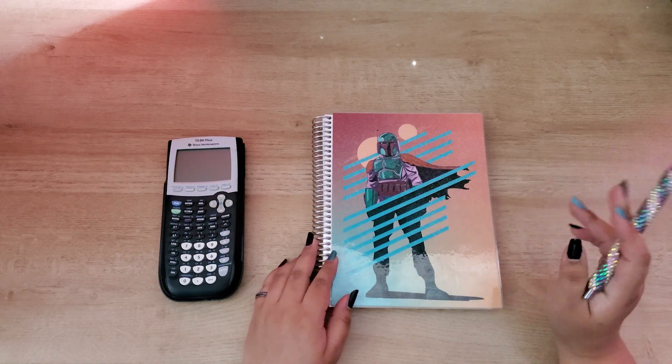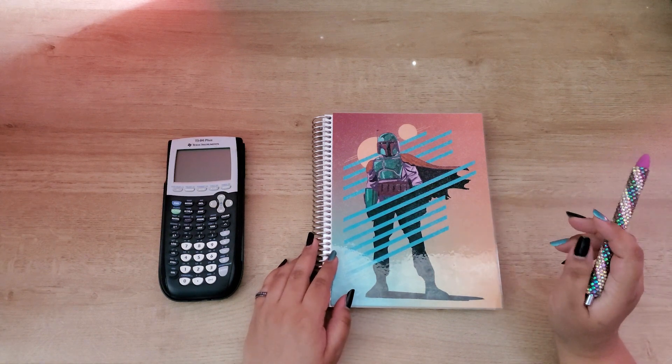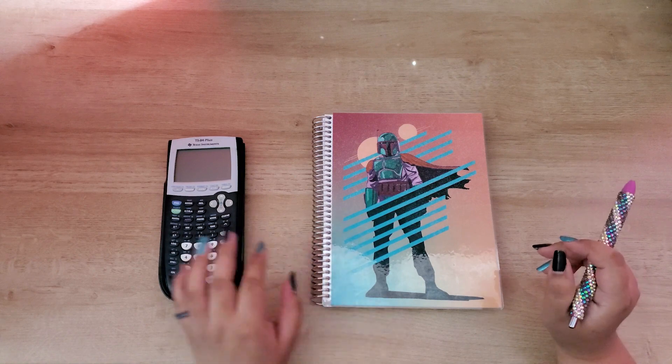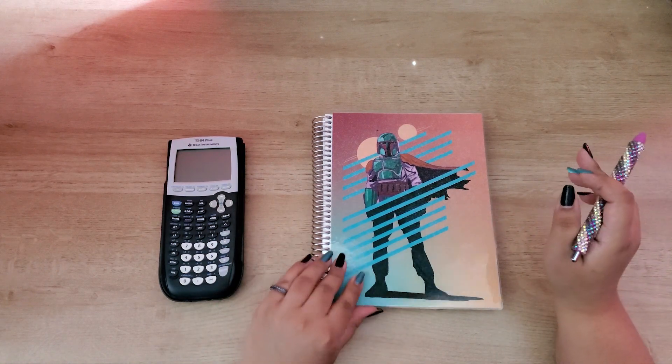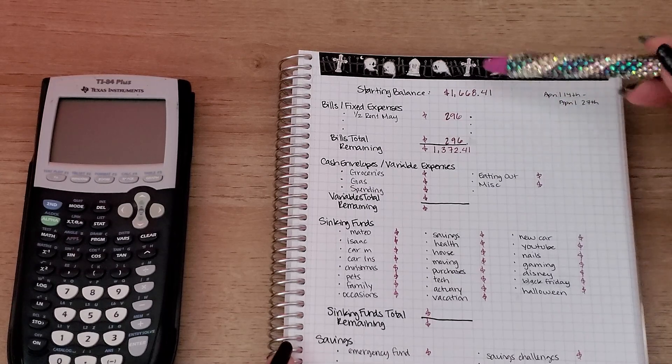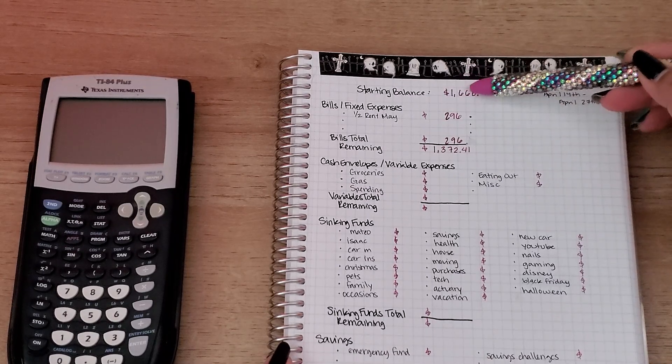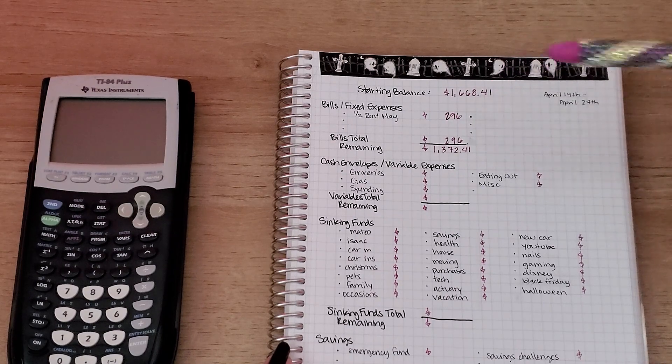Hi everyone, welcome back to my channel. My name is Leah and this is Budget with Leah. Today we're going to be doing my budget with me for my second paycheck of April, so let's get right into that. My starting balance is $1,668.41. That includes my paycheck and a rollover, cashback, etc.